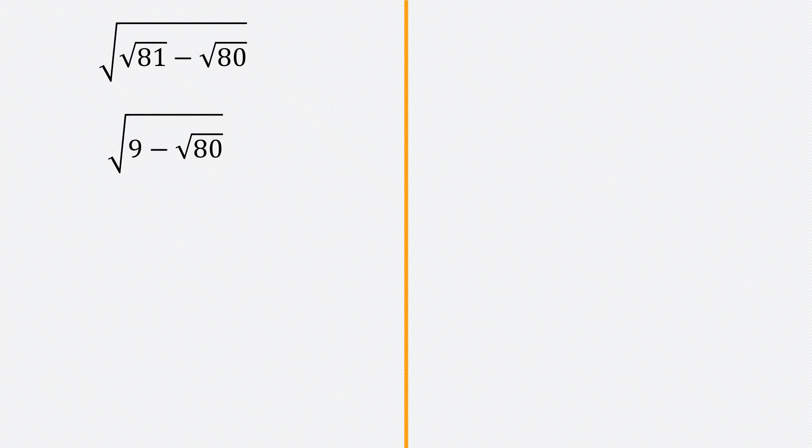We can break root 80 down, which is 16 times 5. The square root of 16 is 4, so root 80 is going to be 4 root 5. But we can also break it down as 4 times 20 — the square root of 4 is 2, so it's 2 root 20. So there are many ways to break down root 80: one way gives you 4 root 5, another way gives you 2 root 20.